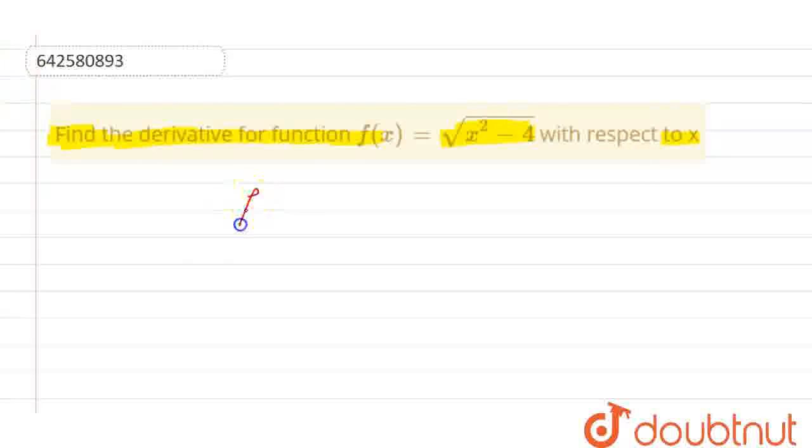We have the question that is f of x equal to root of x square minus 4. So, first of all, we can write f of x equal to x square minus 4 raised to the power half. Root means the power half.